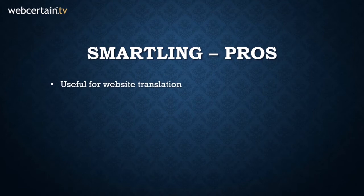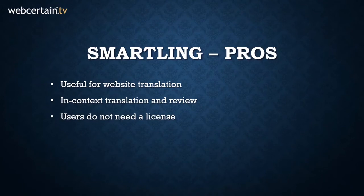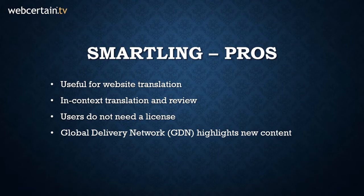So what are Smartling's main pros? Well, Smartling is an incredibly useful tool for website translation. It offers in-context translation and review, which means that translators can see exactly what their translations will look like on the page they'll be published on. This can be especially helpful for things like titles and button text, where the translated text may need to be of a certain length in order to fit on the line or within the button. Also, Smartling does not require users to have a license, meaning that an unlimited number of translators can have a profile created for them. Furthermore, Smartling offers the Global Delivery Network, or GDN, a complementary product that automatically highlights new content for translation when it is added to the site and immediately pushes it for translation.